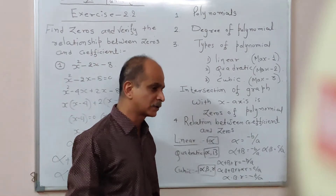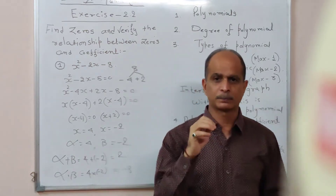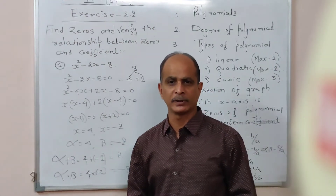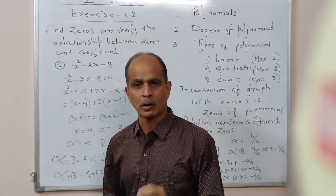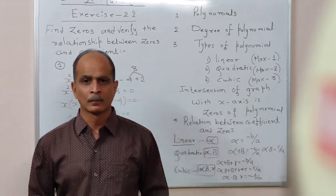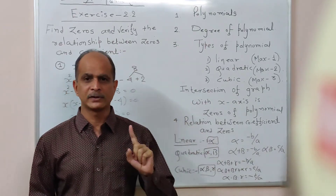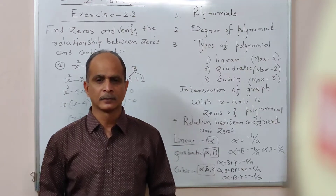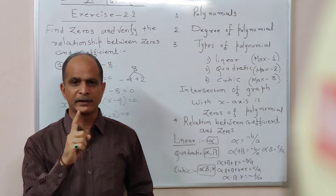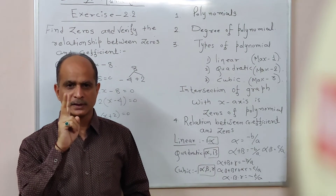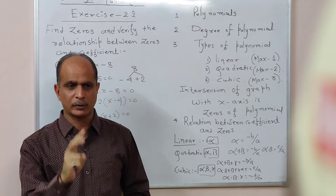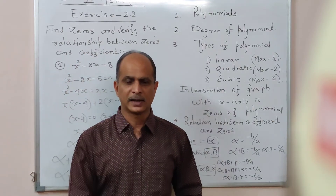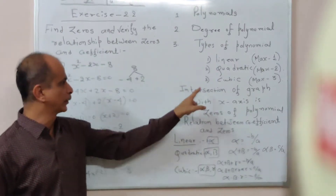Then we also discussed types of polynomials. There are three types of polynomials on the basis of the degree. If the degree is one, then it is known as a linear polynomial. If the degree is two, then it is known as a quadratic polynomial. If the degree is three, then it is known as a cubic polynomial.